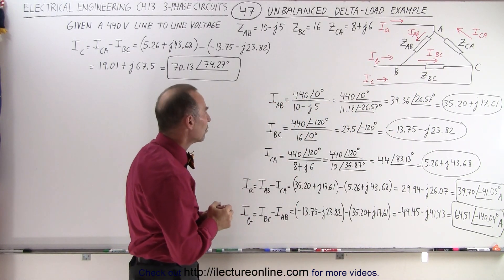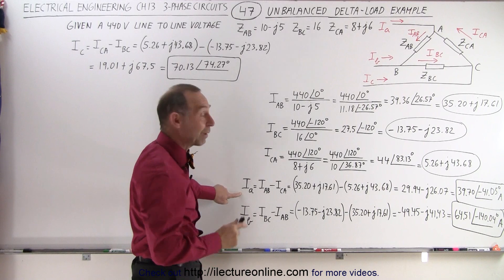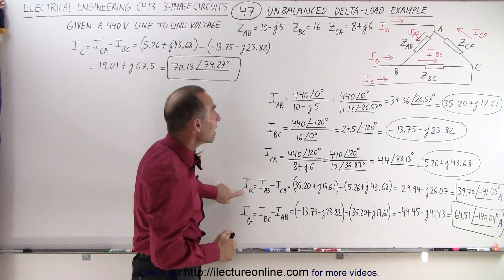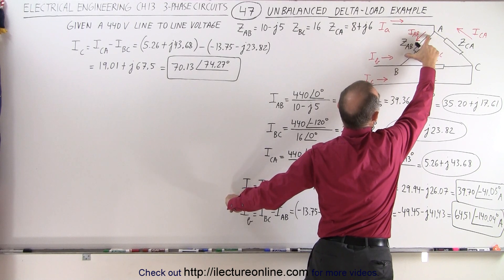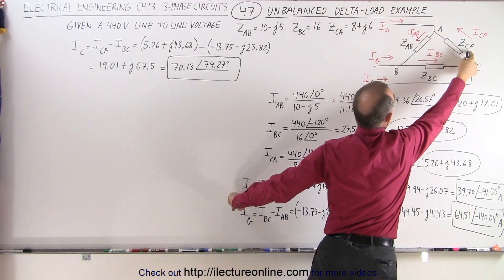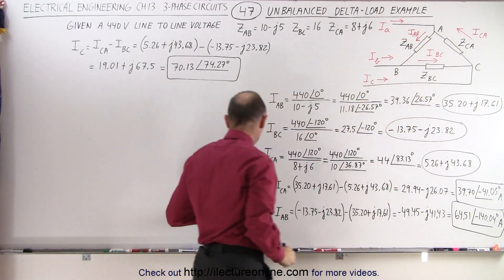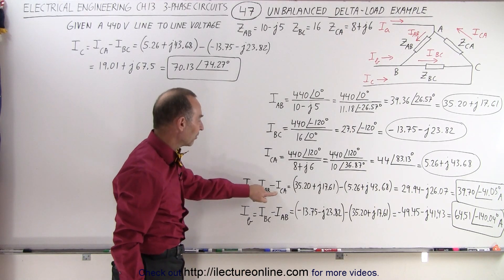Now the next thing we need to do is find the three line currents, and we have to realize that Ia, the current feeding this point right here, is equal to the current Iab minus the current Ica. So that's what we have over here, Iab minus Ica.